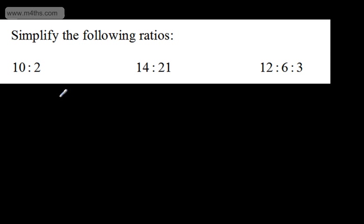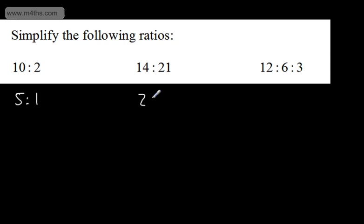We're asked to simplify the following ratios. We simplify ratios like we simplify fractions — we find the highest common factor that we can divide each of the parts by. Looking at the first one, I can simplify by dividing both by two, and we'd say that this is a five to one ratio. This next one: I can't just spot it for 14 and 21, but I can divide by the highest common factor of these two numbers, which is seven, and that would give me a two to three ratio.